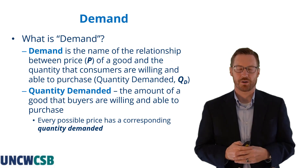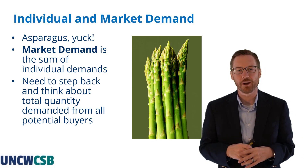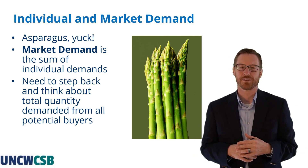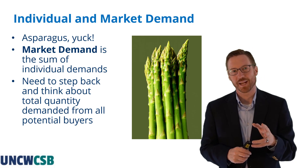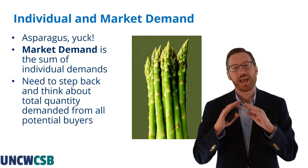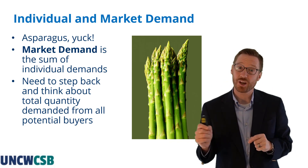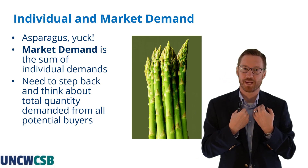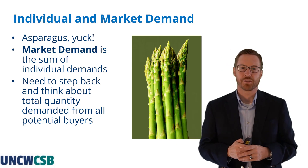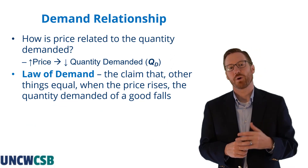Let's think about demand from an individual perspective and a market perspective. For example, asparagus — I'm not buying asparagus no matter what the price is, so my quantity demanded is zero. But market demand is the sum of all individual demands — my demand, your demand, everybody's demand. At each price, the quantity demanded is the sum of all individual quantities demanded from all potential buyers.